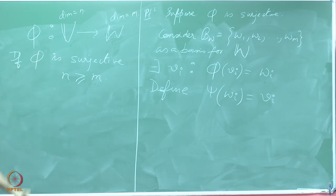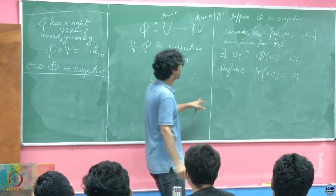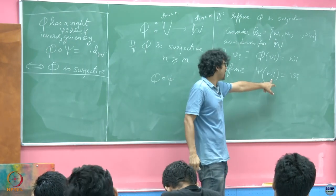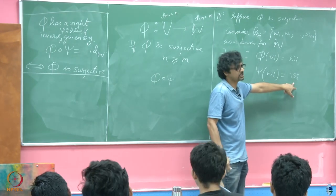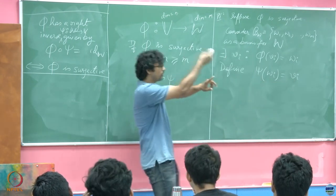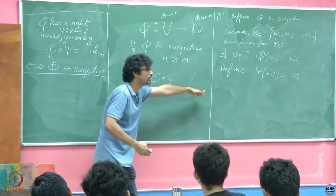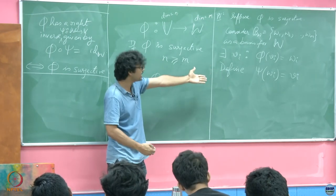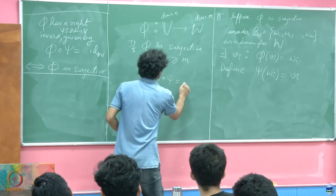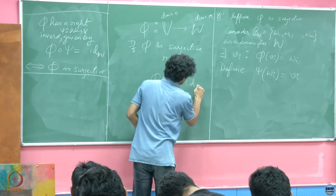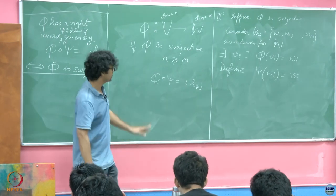This map is a right inverse: phi composed with psi. You give first action to psi — psi acts on w_i, and even if there are multiple possibilities in V, it picks out any one of them. But once you are in one of those elements that map to w_i, if you let phi act on any one of those, they will all take it back to the same w_i. So the identity property holds — this composition will map to the identity. So there is no problem with this definition.